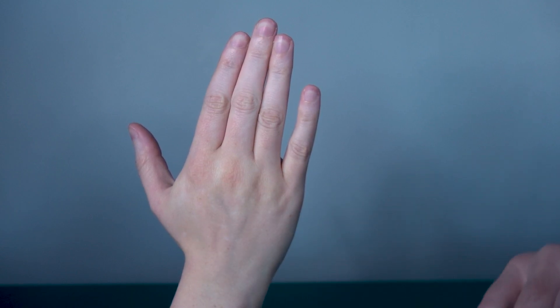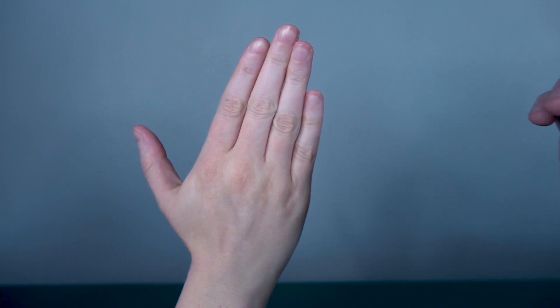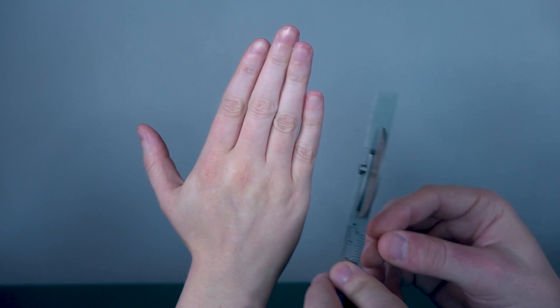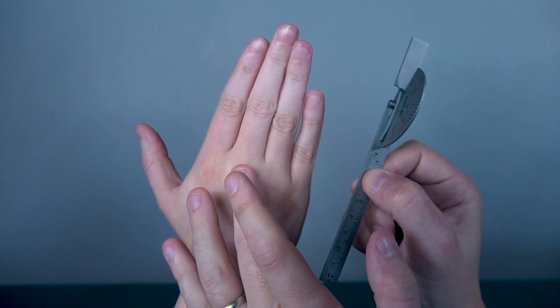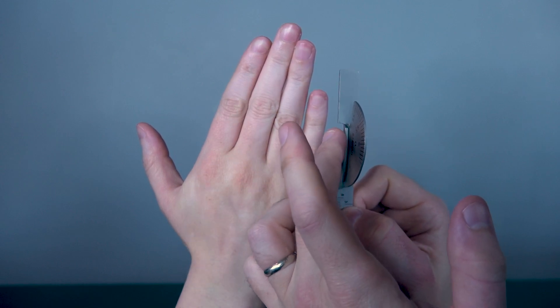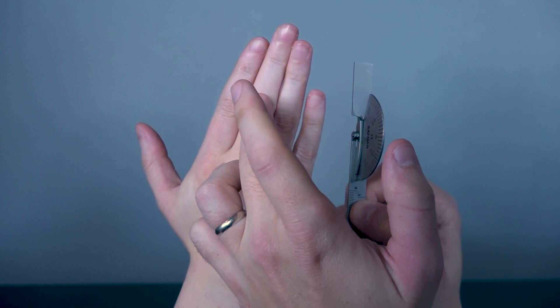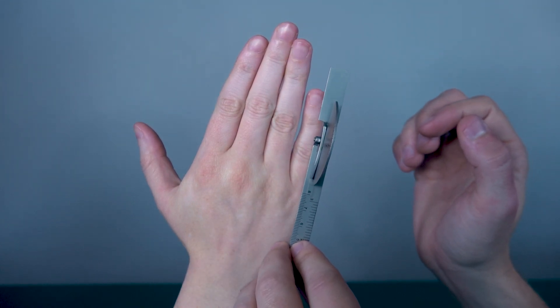When measuring extension, it will be identical to measuring PIP and DIP flexion. The same process will happen. You will have your stationary arm of your goniometer on the proximal phalanx, your movement arm on the middle phalanx, and the axis on the PIP joint.